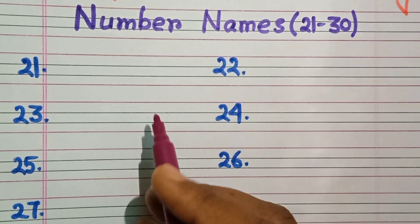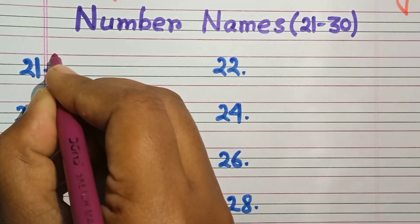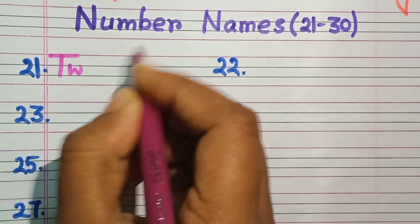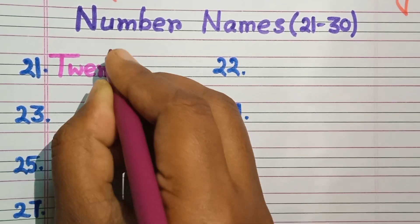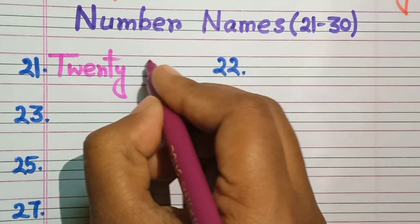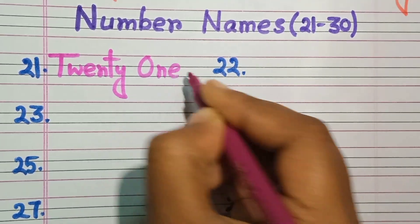21. Twenty-one. T-W-E-N-T-Y, twenty. One, O-N-E.